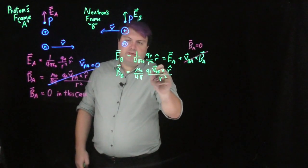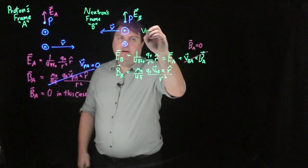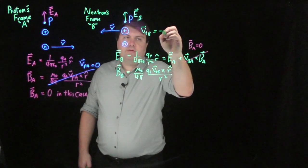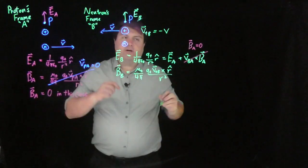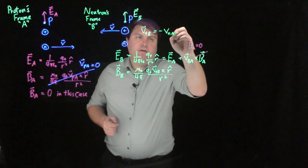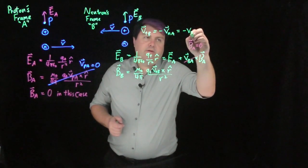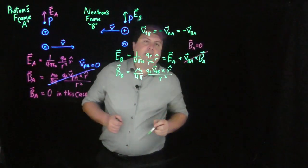and now the velocity of the charge in frame B crossed with r hat over r squared. So now this is not zero because our charge in frame B is equal to negative the velocity of the charge in frame A. So we can kind of say it's also equal to negative V r hat.